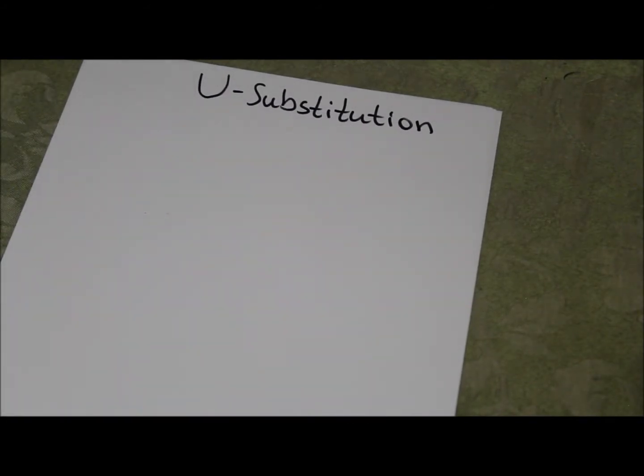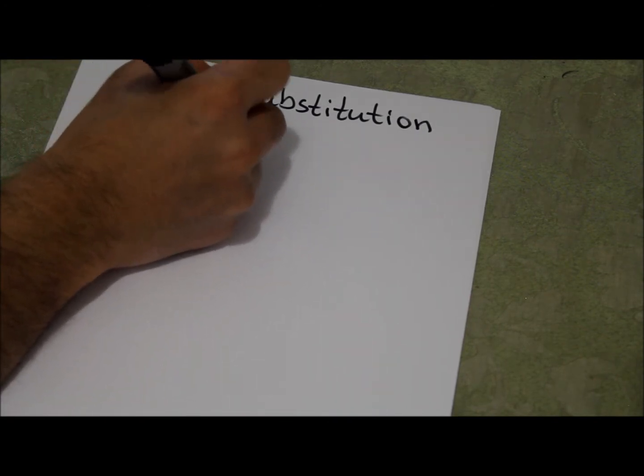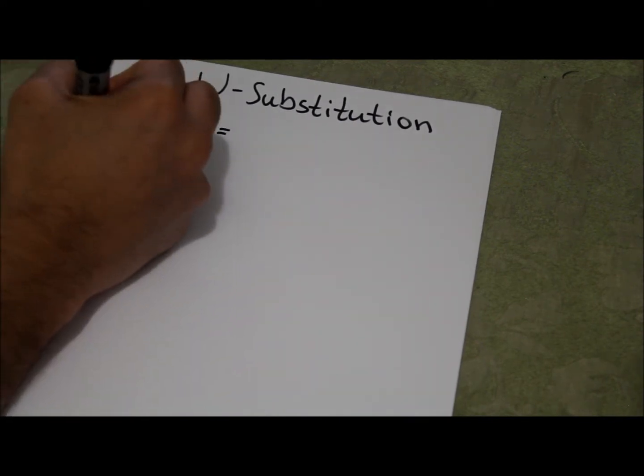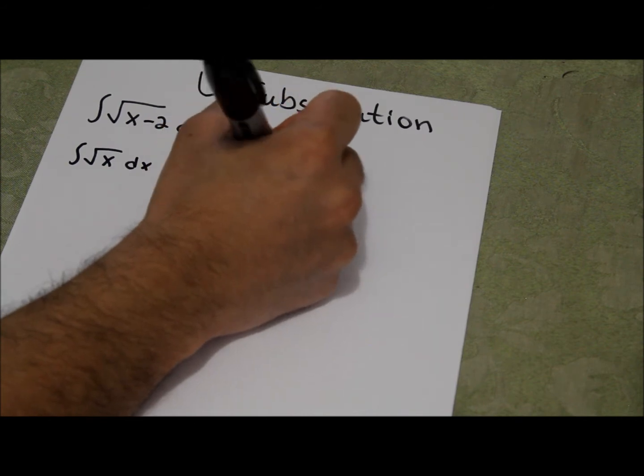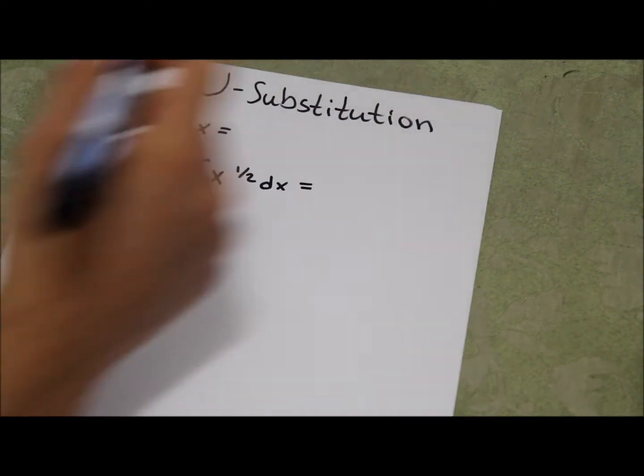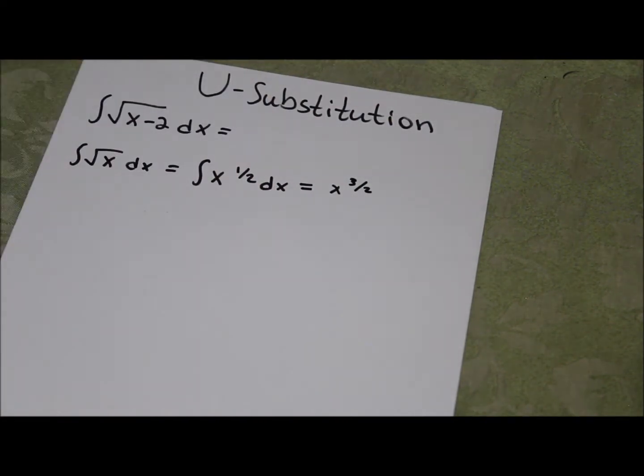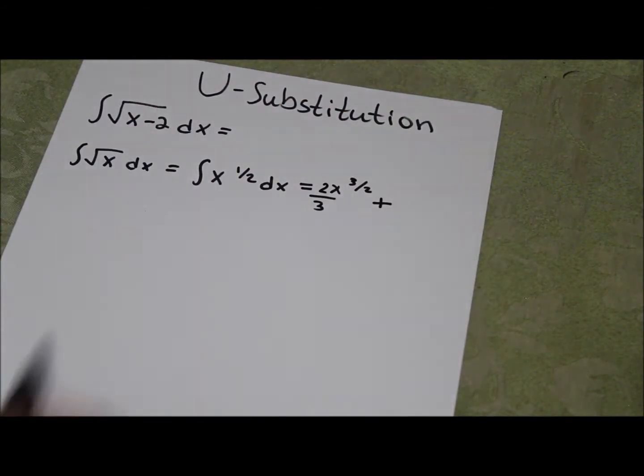Let's take the problem integral of square root of x minus 2 dx. Now we see that inside the square root we have x minus 2. If it was just integral of square root of x dx, we could have done x raised to the half power dx equals x to the third halves divided by 3 halves, which would be multiplying by the reciprocal 2 over 3. And since it is an indefinite integral you add the c.